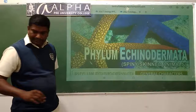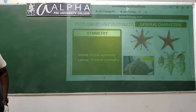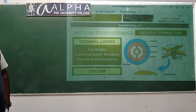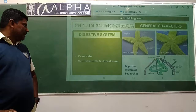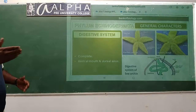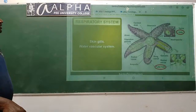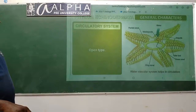Phylum Echinodermata - that means spiny-skinned animals. Echin means spines. We see organ level of organization. The symmetry: adults are radially symmetrical and larvae are bilaterally symmetrical. Triploblastic animals with three germ layers: ectoderm, endoderm, and mesoderm. Exclusively marine. The digestive system is complete - ventral mouth and dorsal anus, because they are dorsoventrally flattened, so the mouth is at the ventral side and anus at the dorsal side.